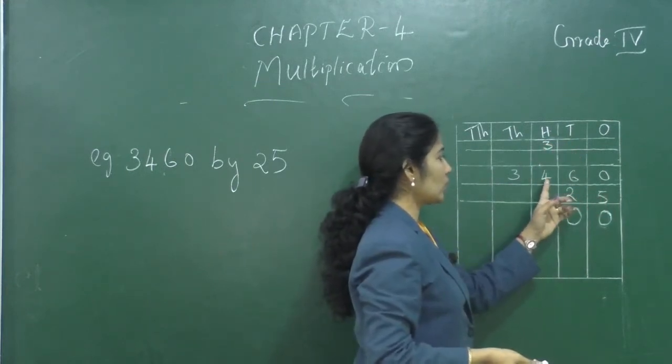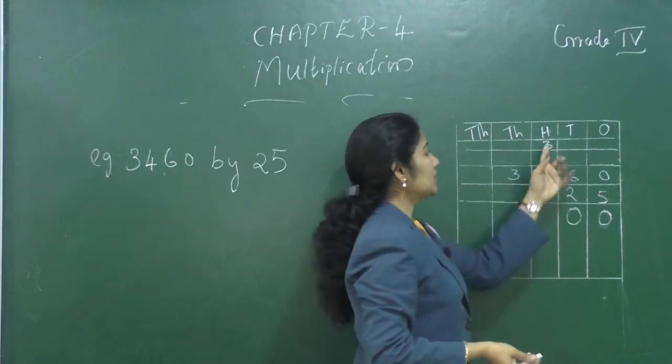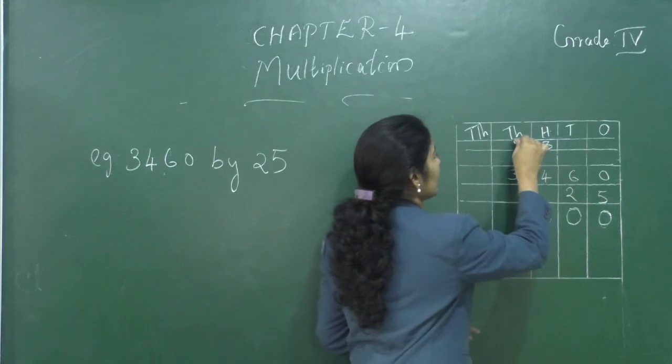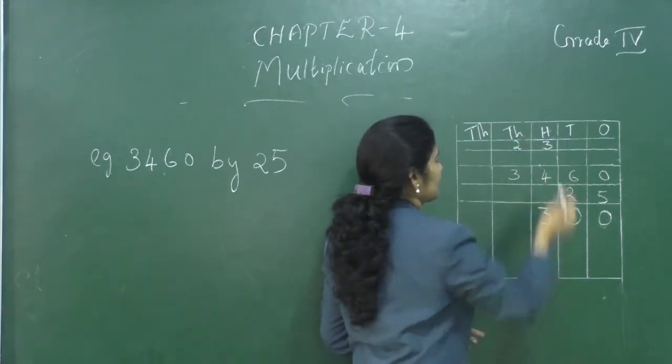Now, what is 5 into 4? 20. 20 plus 3? 23. So, 3 we can write at the 100's place. 2 carry over, we can write at the 1000's place.